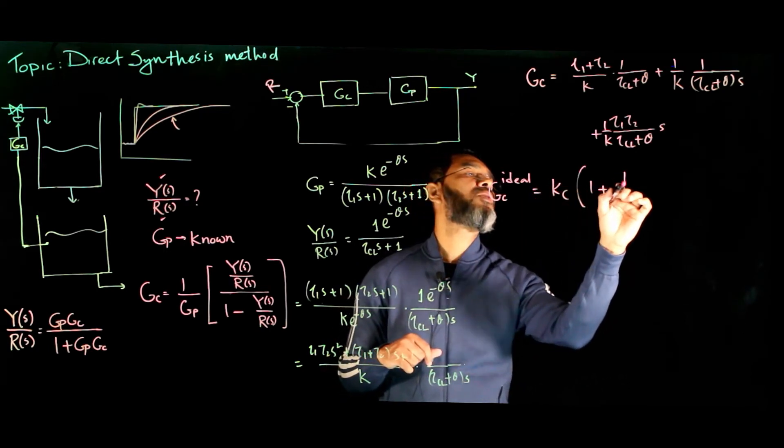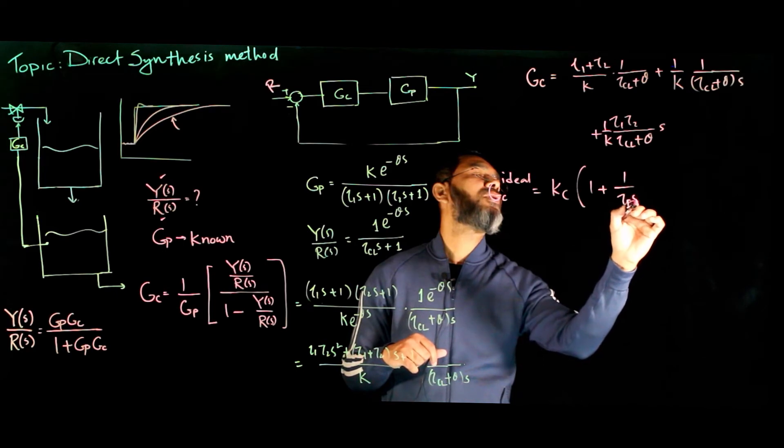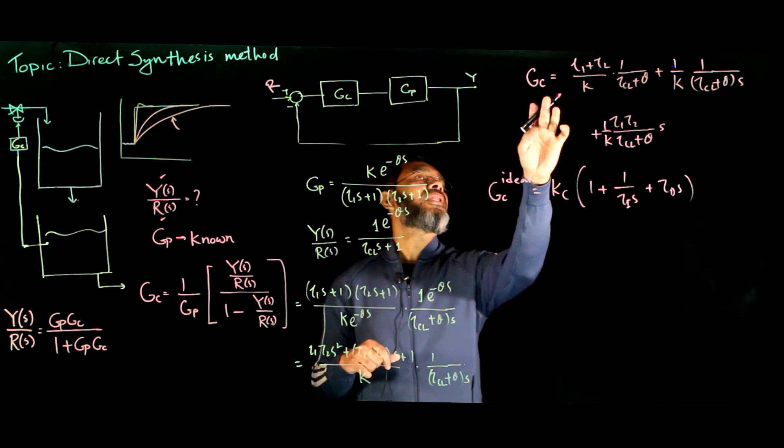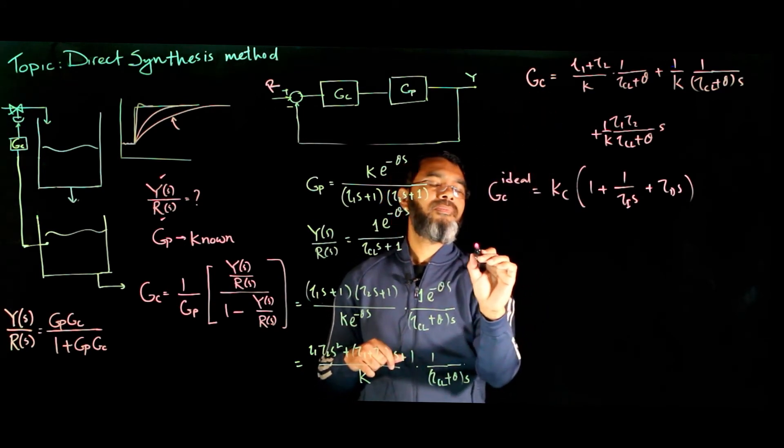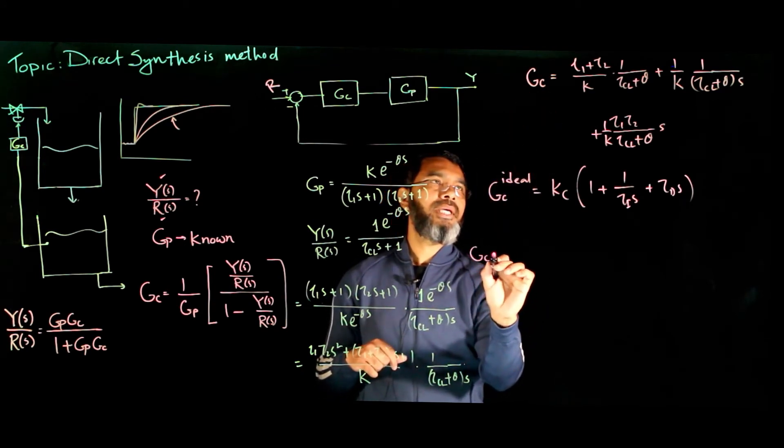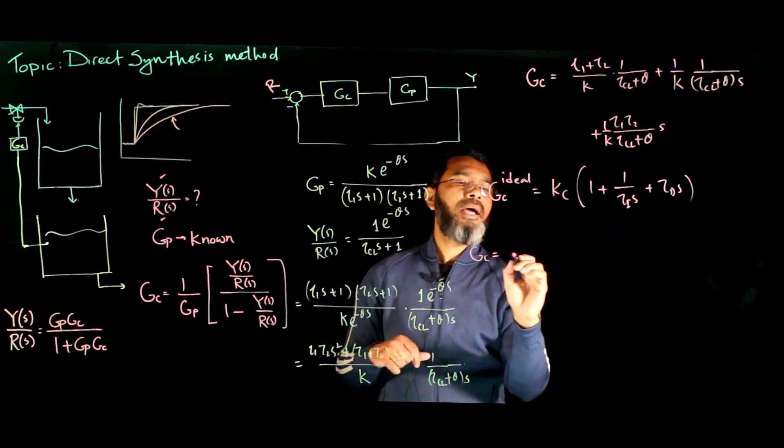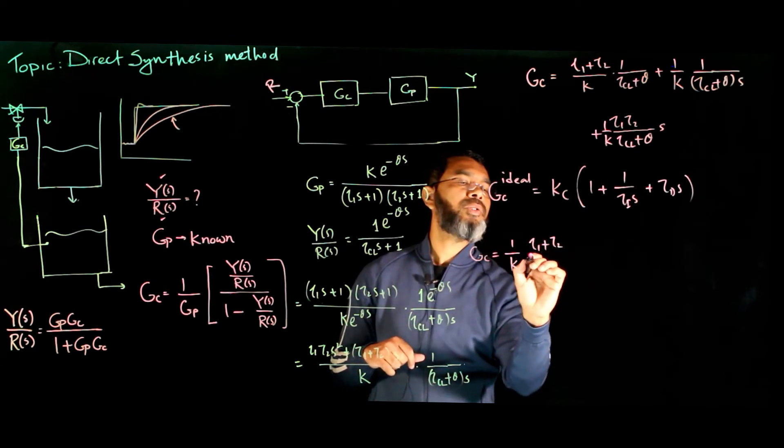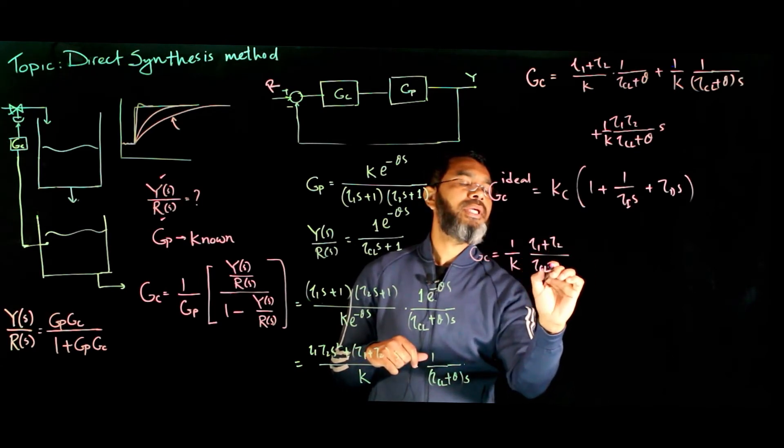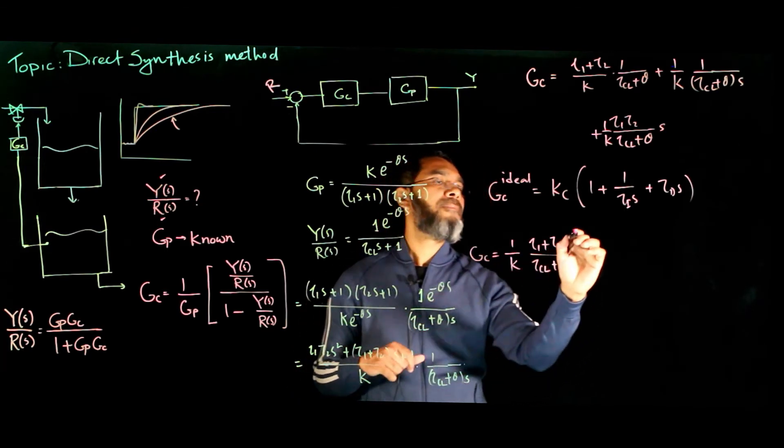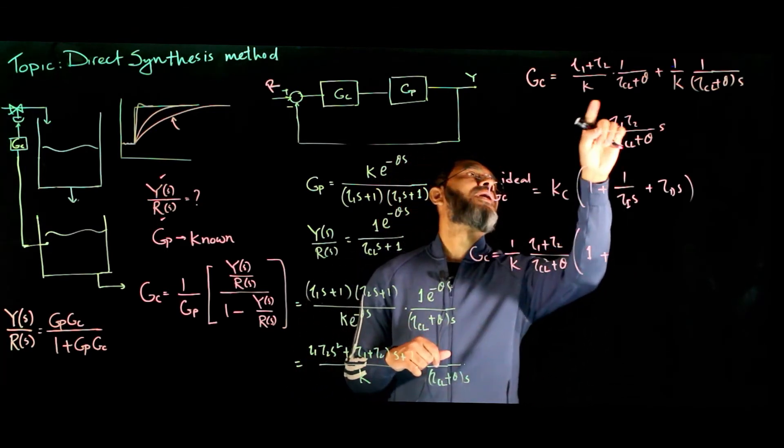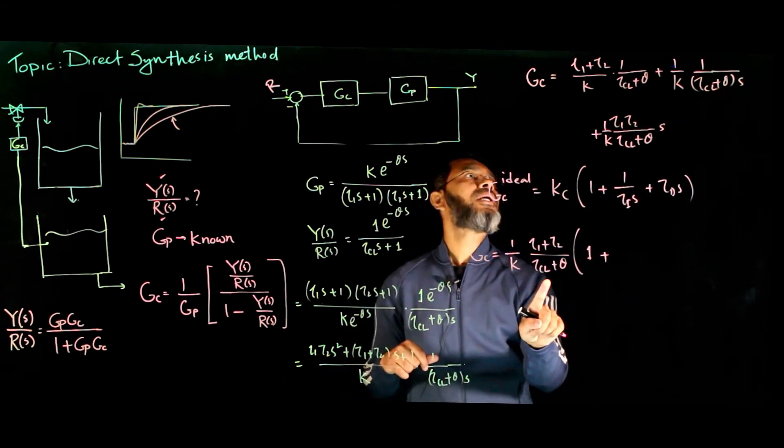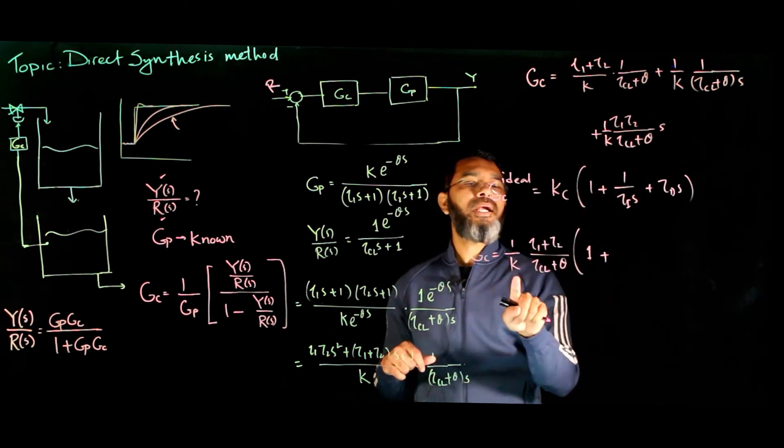And the first term I'll write at the end, that becomes tau 1 tau 2 over tau cl plus theta s. Okay, this s and s gets cancelled out and there will be this term 1 over k. Now I want to compare this with the standard or the ideal PID form, which is kc times 1 plus 1 over tau i s plus tau d s.